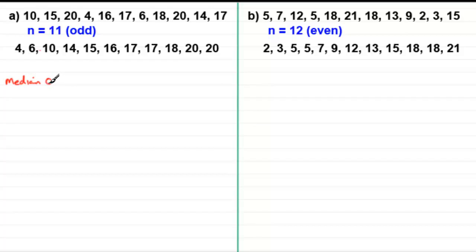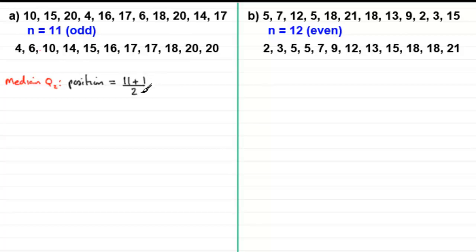The median is often called Q2. To get the position for any list of data, whether odd or even, we add up the number of observations — 11 in this case — add one to that value, and divide by 2. So we've got 11 plus 1 is 12, divided by 2 is 6. We're looking at the 6th value in — counting in: 1, 2, 3, 4, 5, 6 — it's going to be this value here, the 16. So that is Q2.